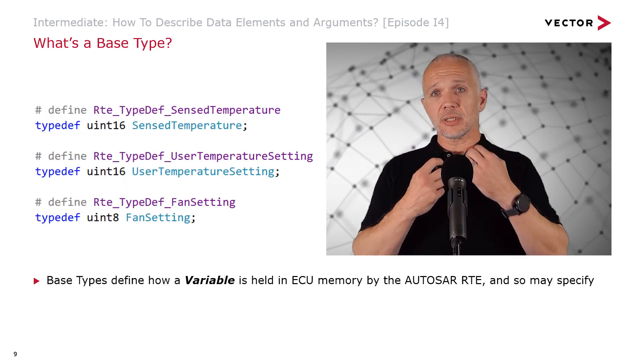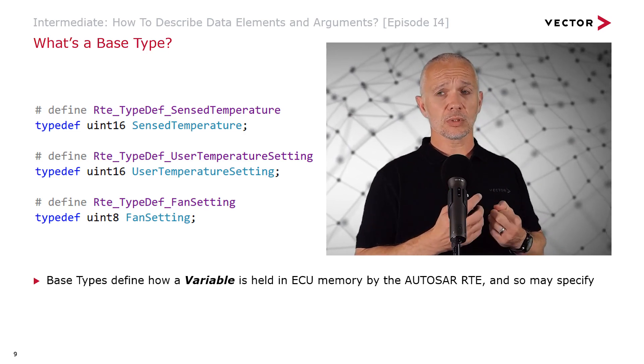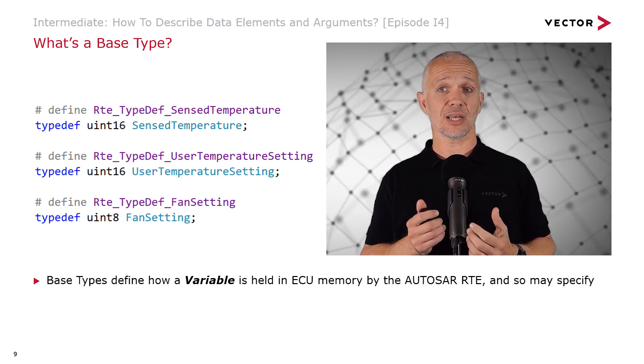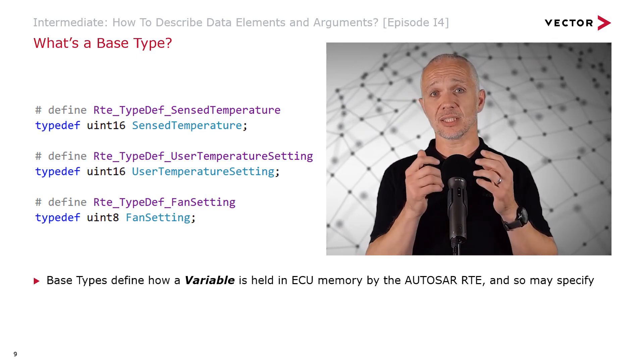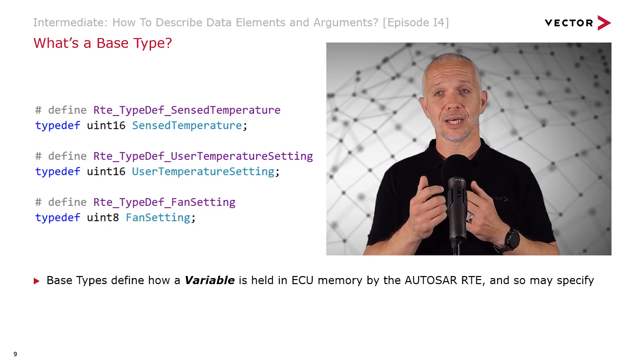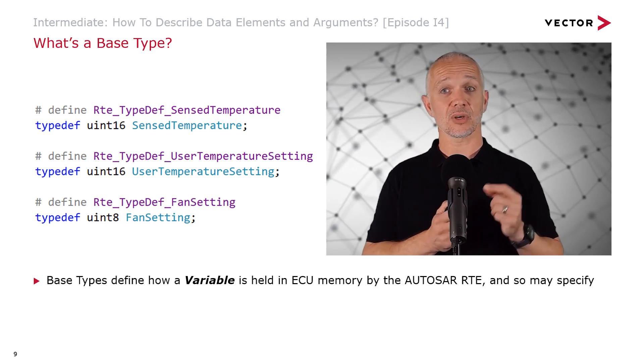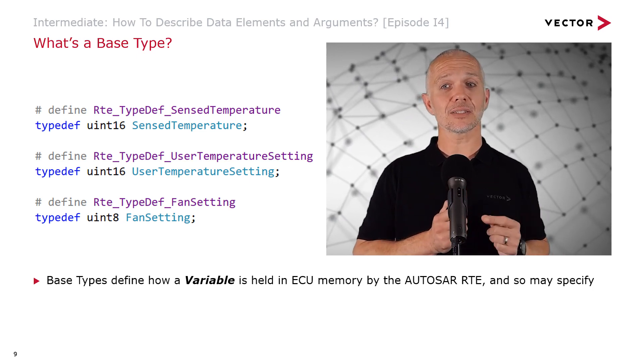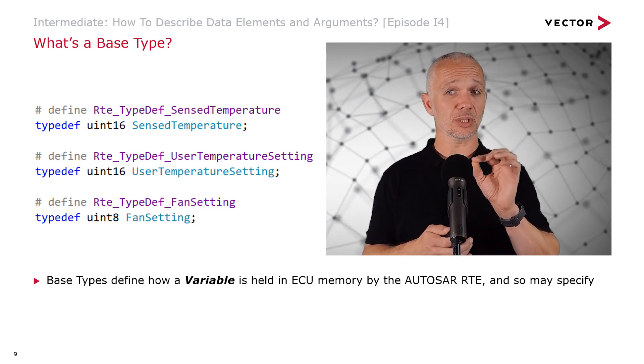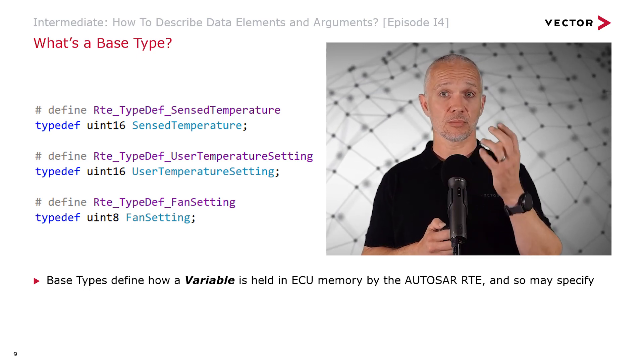So we mentioned base types. What are base types? Well, here we see the typedef statements that we just talked about. And we see there's a typedef, and then there is a C data type being used to define another data type. The data type we're defining in the blue text here is the implementation data type. Our base type is the black text.